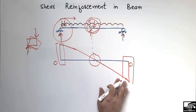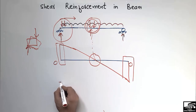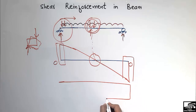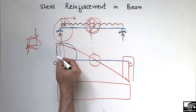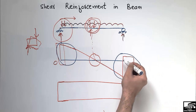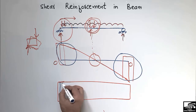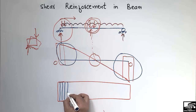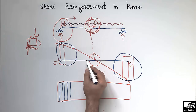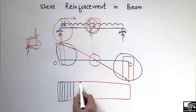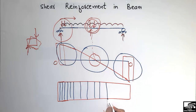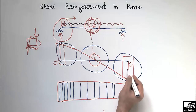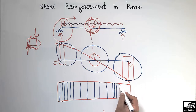If we draw the reinforcement detail for this beam, at the ends where there is high shear demand, the stirrups are placed at a smaller distance. After the end zone, where there is no such high shear demand, the spacing of the stirrups can be larger. At the other end, where shear demand is high again, we again provide a smaller stirrup spacing.